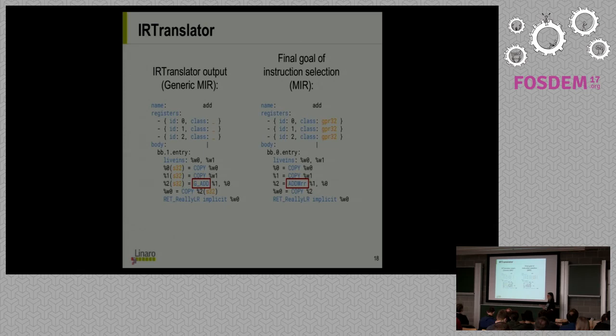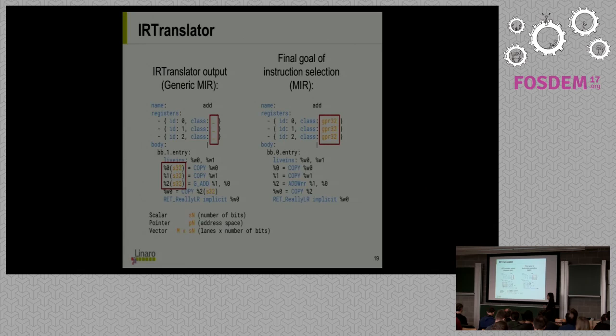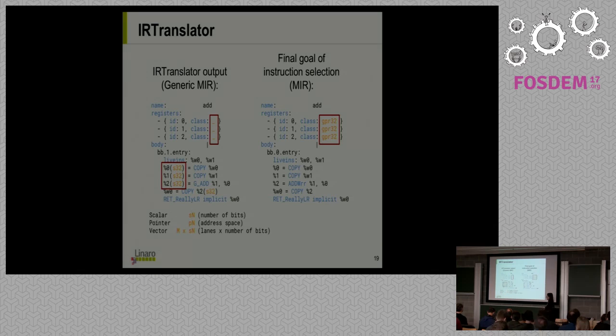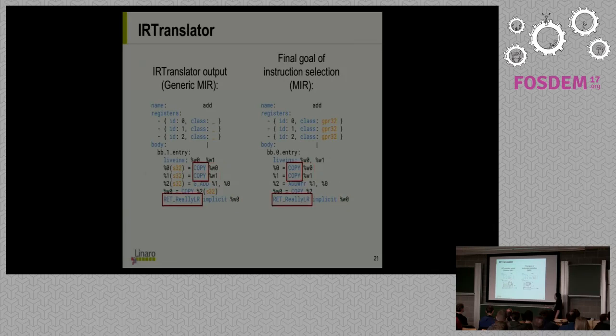To get a feel of this, this is the same code as on the previous slide. This is the final machine IR we're trying to obtain. On the left side, you can see the corresponding generic machine IR. This is as far as the IR translator gets us. What you should notice here is that we have the generic add here. At this point, we don't care that it's adding registers. We don't care if it's legal to add things on this target. We just know that the intention of the code is to add two values. These values don't have register classes yet. As you can see, there's a dash here. But instead, they have some types. These are different from the types in LLVM IR. They're closer to the machine. Basically, they're scalar values on any number of bits, pointer values into any address space, and vectors with any number of elements of any dimension.